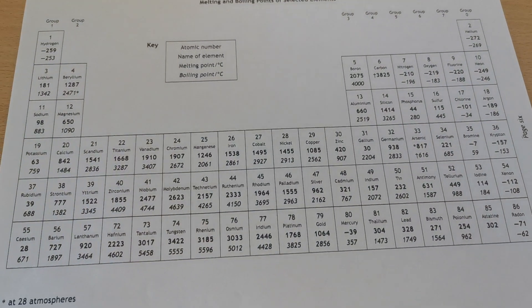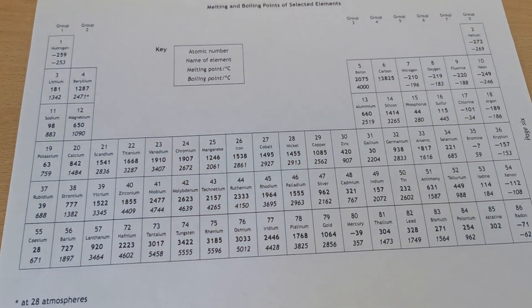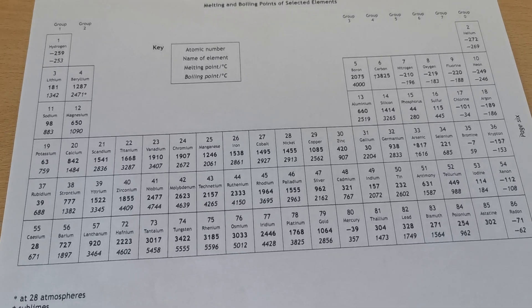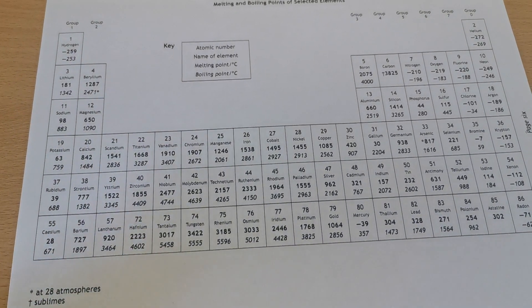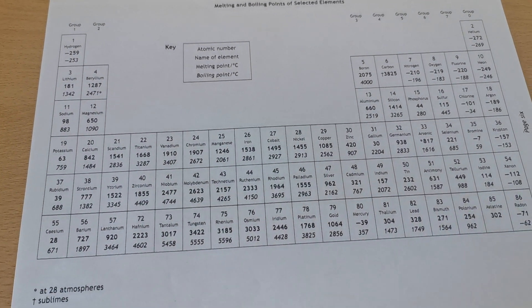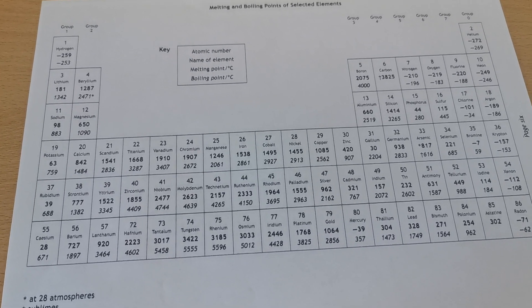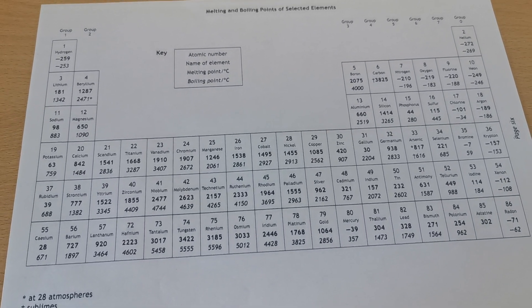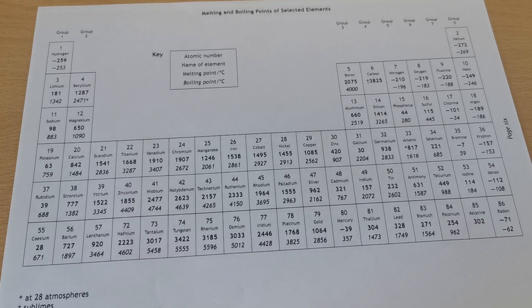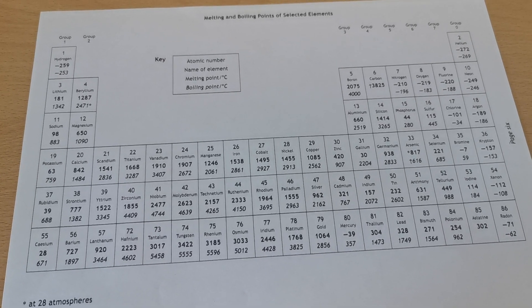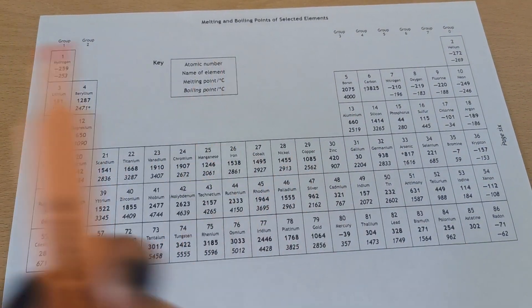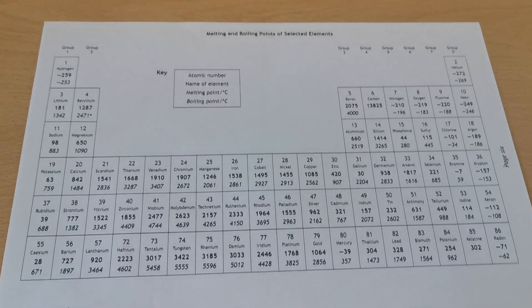So the first structure is one that you would have learned in National 5 chemistry and that's metallic lattice. All of the metal elements are in a metallic lattice structure, so I'm going to take one of my colours of highlighters and colour all of those elements in.